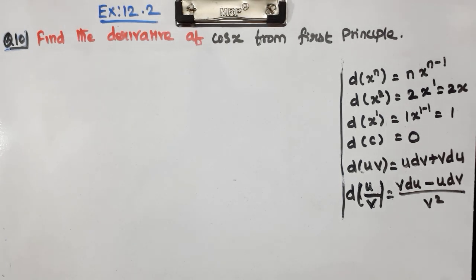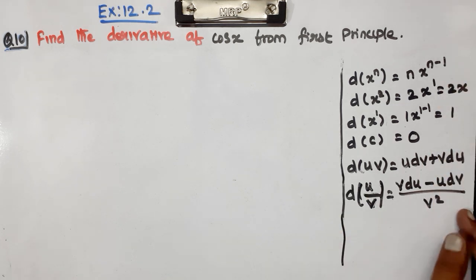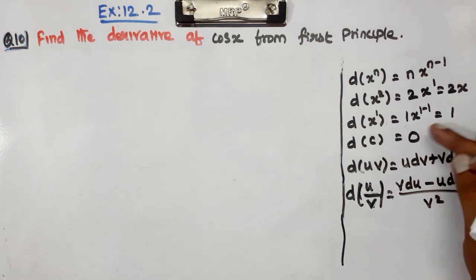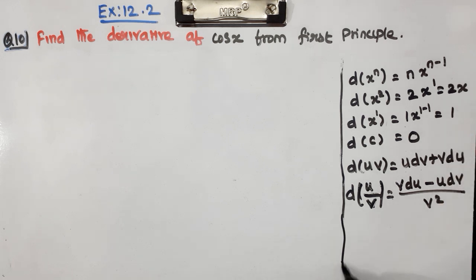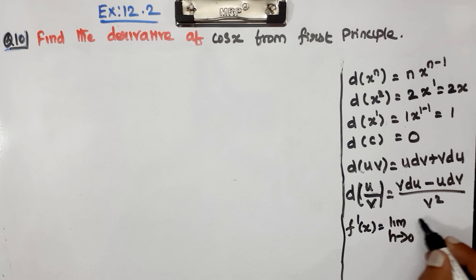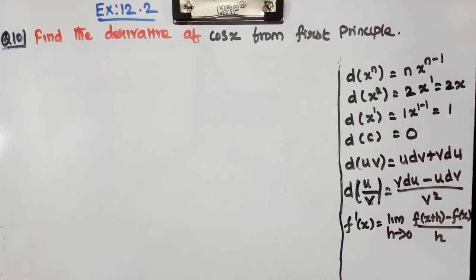What is the first principle? The first principle formula is: F'(x) = limit h tends to 0, F of (x + h) minus F of x, divided by h.